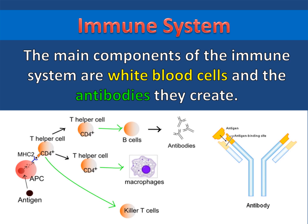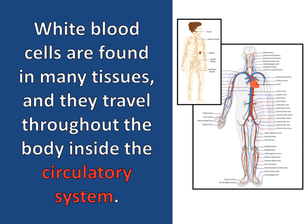The main components of the immune system are white blood cells and the antibodies they create. White blood cells are found in many tissues and they travel throughout the body inside the circulatory system. The lymphatic system is just part of the circulatory system, and this is where many of the white blood cells are found.